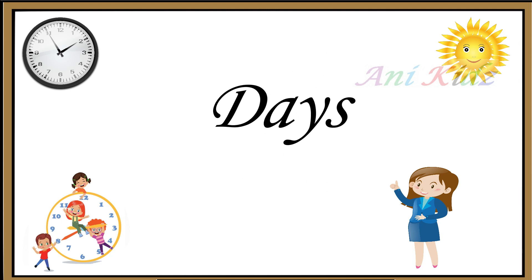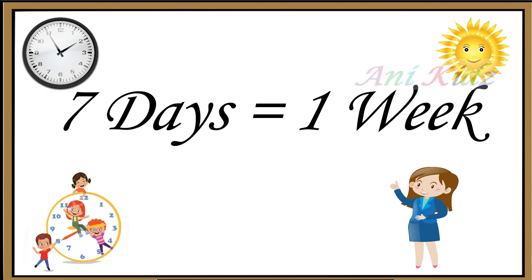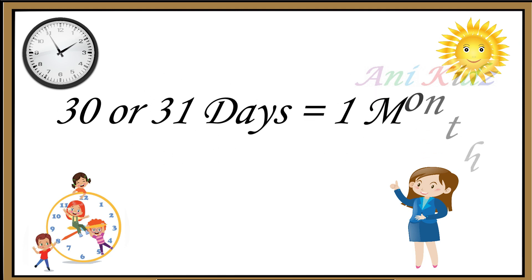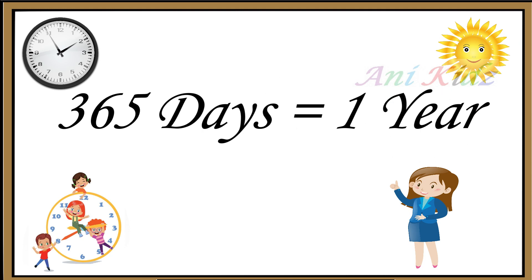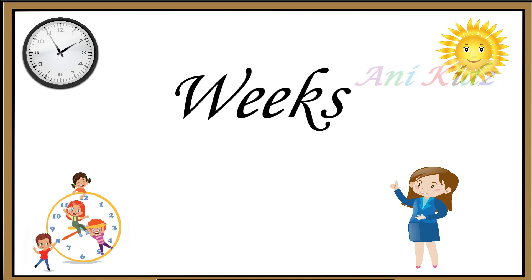And the next bigger unit is days. Seven days is equal to one week. Thirty or thirty-one days is equal to one month. Three hundred and sixty-five days is equal to one year.